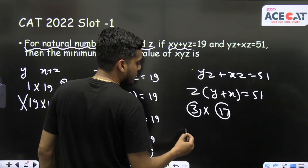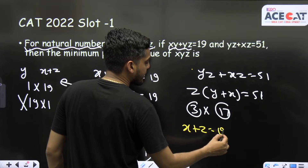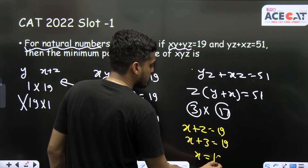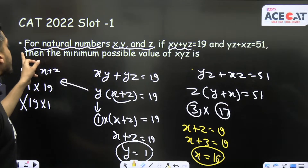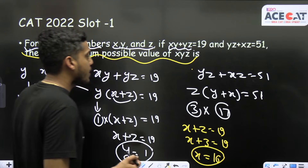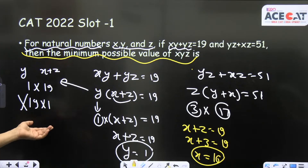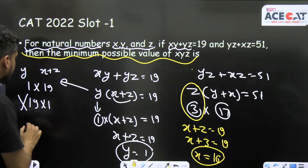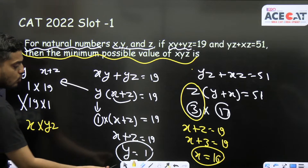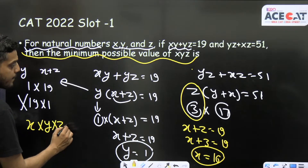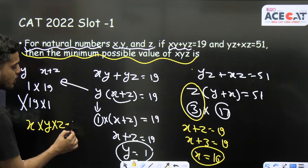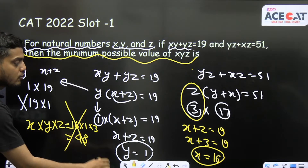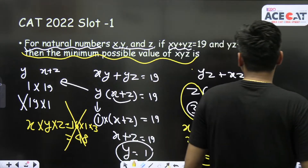With y = 1, z = 3, and x + z = 19, putting z = 3 gives x + 3 = 19, so x = 16. Most students then found xyz = 16 × 1 × 3 = 48. But that is the wrong answer — there is one more case that we are ignoring.